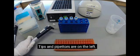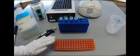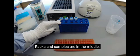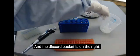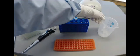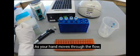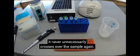Tips and pipetters are on the left. Racks and samples are in the middle, and the discard bucket is on the right. As your hand moves through the flow, it never unnecessarily crosses over the sample again.